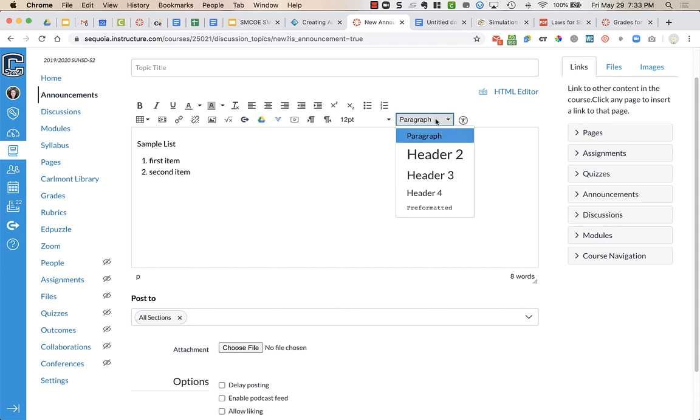This right here is what allows you to change the different parts of your text. So you can change things for headers, paragraph, etc., to help organize the page so it is easy for screen readers.